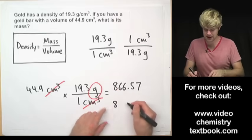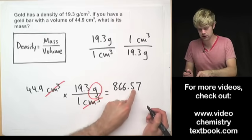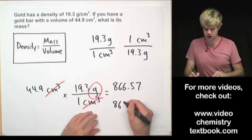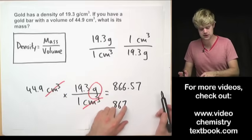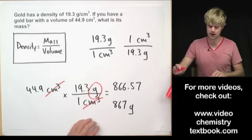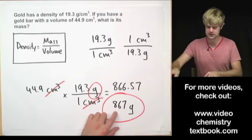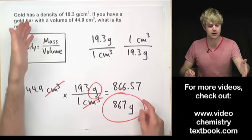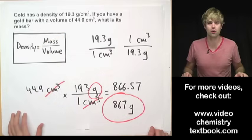I'm going to keep the 8, 6, look there to 5 so that 6 is going to go up. It's going to be 8, 6, 7 and what are my units? Units right here, units are in grams. 867 grams is how much this piece of gold would weigh.